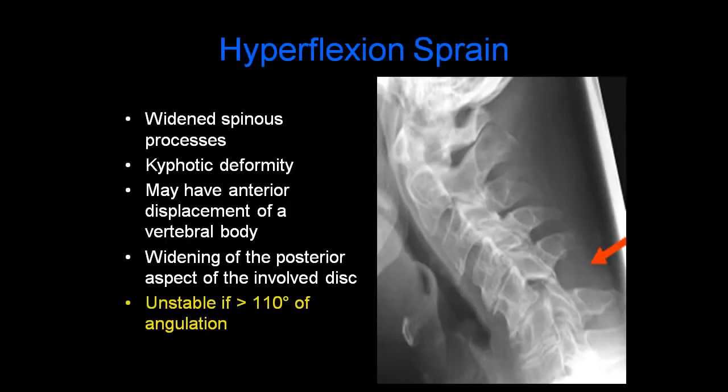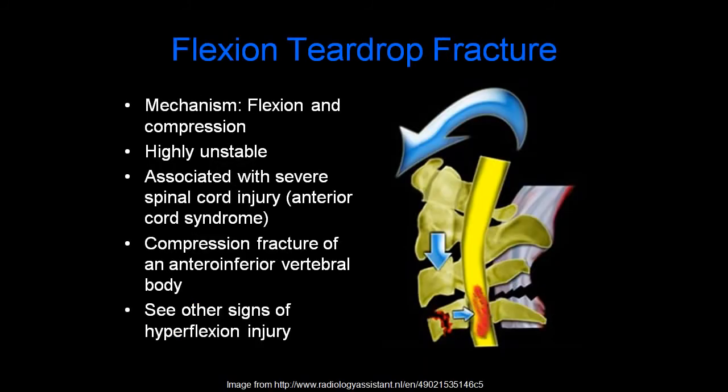With a hyperflexion sprain, there are widened spinous processes and a kyphotic deformity. You may have anterior displacement of one vertebral body on another, as well as widening of the posterior aspect of the involved disc. This is considered unstable if there are greater than 11 degrees of angulation.